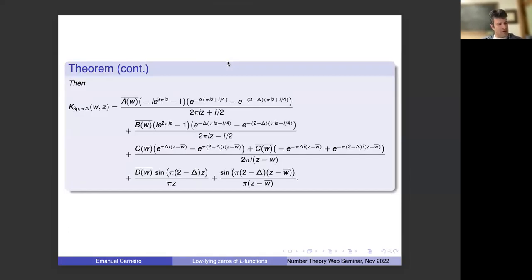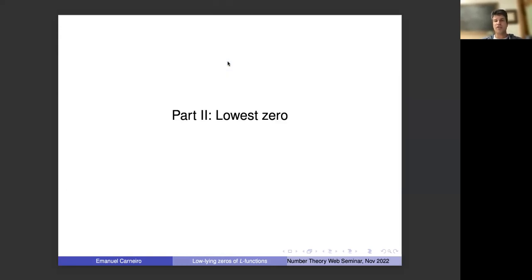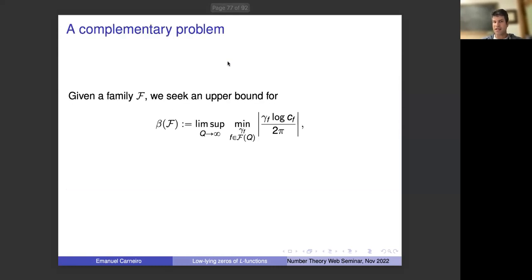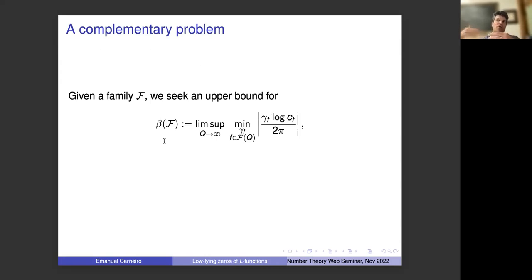Let me comment on the lowest zero problem in about five minutes. This complementary problem asks: if you take all functions in your family with conductor q and ask for the minimum normalized zero height, what is this minimum as q goes to infinity? I want upper bounds — the minimal zero is not more than some fraction of the average spacing. This problem was considered by Hughes and Rudnick in 2003 for the case of Dirichlet L-functions.